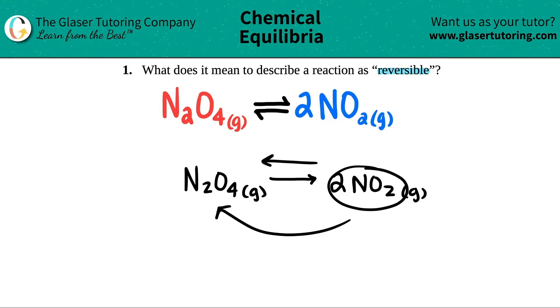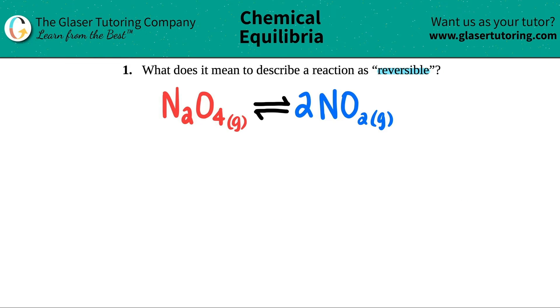So reversible - you have two reactions going on at the same time. At the same time, you have N2O4 getting produced into 2NO2.